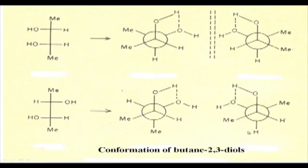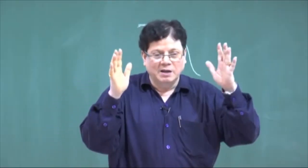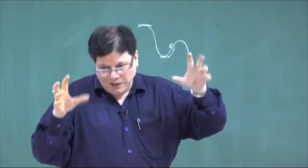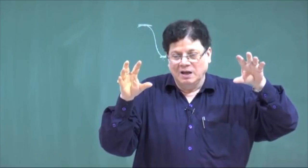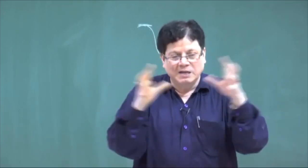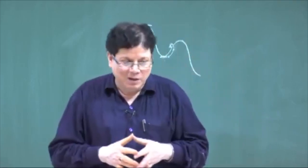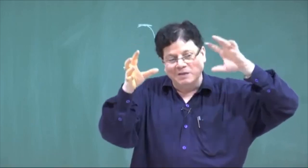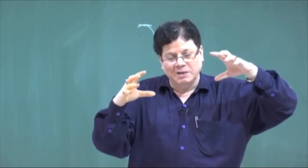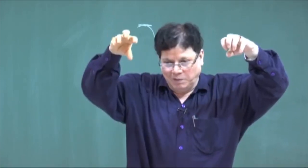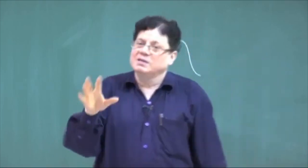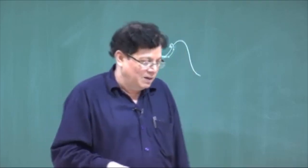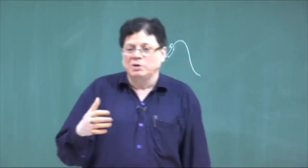We have seen the conformational analysis of n-butane. Next we will go to other systems where dipole-dipole repulsion takes place. When groups are sterically larger with no charge separation, steric strain makes the gauche form less stable than anti. When hydrogen bonding is possible, the gauche form becomes more stable. Another case is dipole-dipole repulsion — where partially negative charges on adjacent groups repel each other. We will discuss these cases in the next lecture. Thank you.